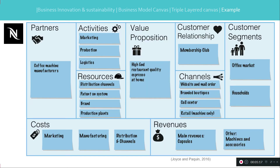I will explain the TLBMC model using the example of Nespresso coffee by Nestlé, beginning with the economic layer. The customer segment is the office market and households. The value proposition is high-end restaurant-quality espresso at home. The customer relationship is a membership club. Channels are the website, branded boutiques, call center, and retail for the machine only. Main revenues come from the capsules, with machines and accessories as secondary. Key activities are marketing, production, and logistics. Cost structure covers marketing, manufacturing, and distribution. Resources are distribution channels, patent, brand, and production plant. Key partners are coffee machine manufacturers.